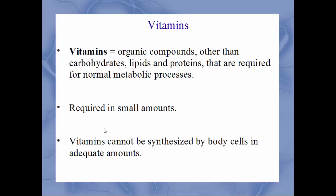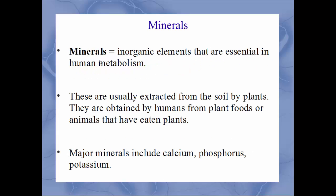A lot of people confuse vitamins and minerals thinking they're the same thing — they are not. Vitamins are organic compounds, meaning they contain carbon, and are needed for metabolic reactions. They're only needed in small amounts because the body can't make them in any really usable amount. Minerals, on the other hand, are inorganic — they don't have carbon. Minerals are usually absorbed by plants from the surrounding soil, and when we eat those plant sources we get those minerals. Examples include calcium, phosphorus, and potassium. The key difference: vitamins are organic, minerals are inorganic.